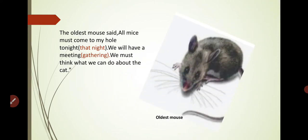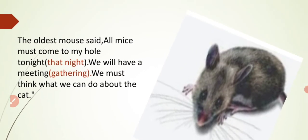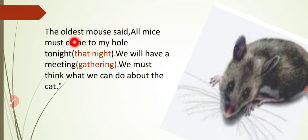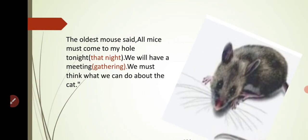This is the second paragraph: 'One day the oldest mouse said: all mice must come to my hole tonight, we will have a meeting, we must think about what we can do about the cat.' You can see the picture of a big mouse. Mice live in holes — small empty spaces they make for themselves. They are very flexible and can pass through very small spaces and make their own paths.